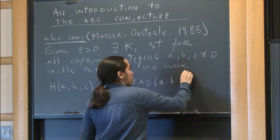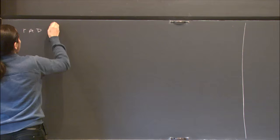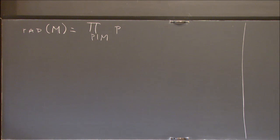The height here is just the naive thing: you take the absolute value of these three integers and keep the maximum. The radical of an integer m is the product of the primes dividing m with exponent one. So you write the factorization, raise exponents, and just keep one. That's the radical.